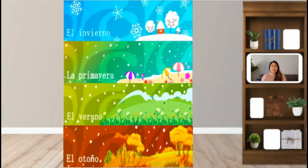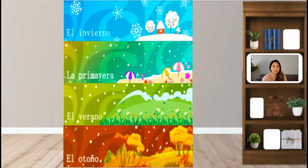Ahora, como te dije, vamos a estudiar las cuatro estaciones. Hay cuatro estaciones. ¿Cuántas estaciones hay? Sí, cuatro. El invierno, la primavera, el verano y el otoño. Now, there are four seasons. How many seasons are there? Yes, four. There is winter, spring, summer, and fall or autumn.